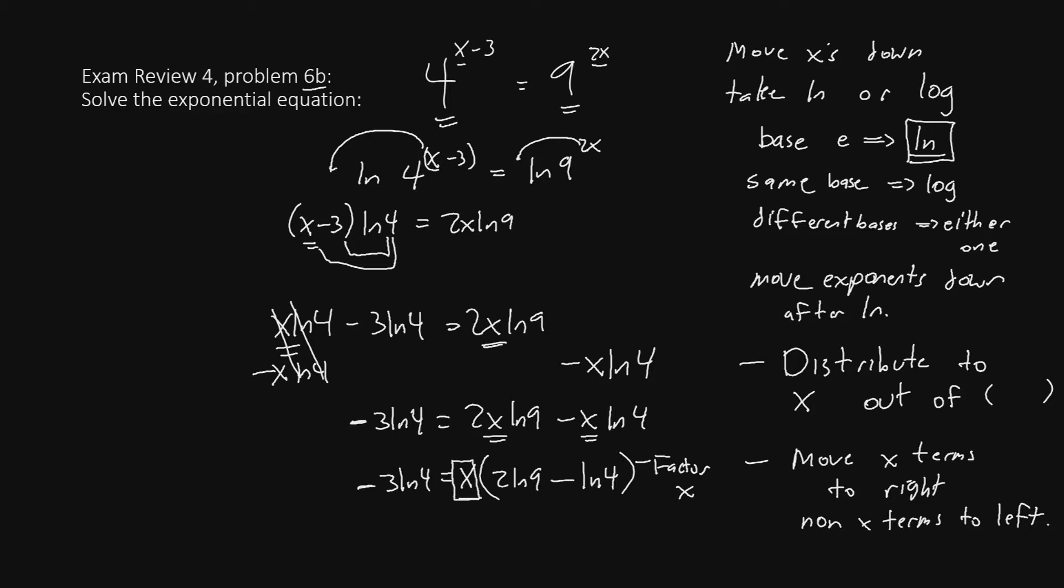And now to solve for x, we're going to divide both sides by this big chunk, 2 ln 9 minus ln 4. That entire chunk cancels out, so our final answer will be x equals negative 3 ln 4 divided by 2 ln 9 minus ln 4.